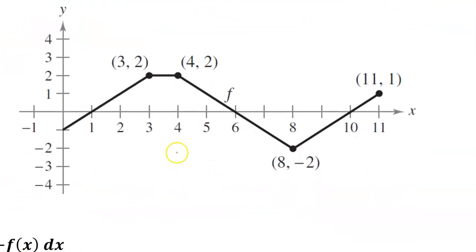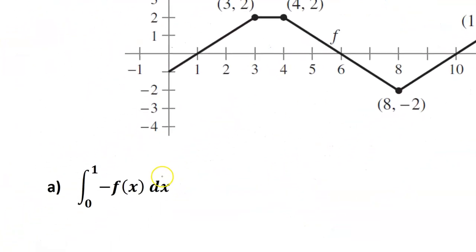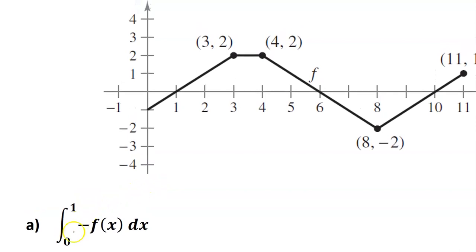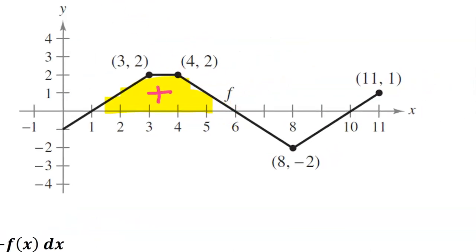Now let's move on to graphs. Remember that a definite integral is just the area under the curve — the area between the curve and the x-axis. Keep in mind that if you are looking at an area that is above the x-axis, that will be positive. An area that is below the x-axis is going to be counted as negative.